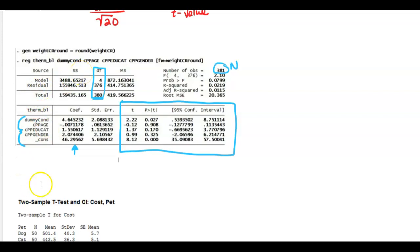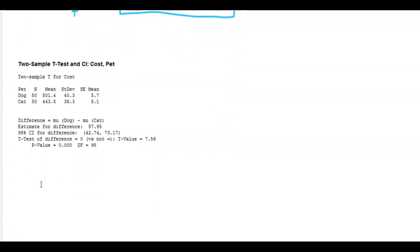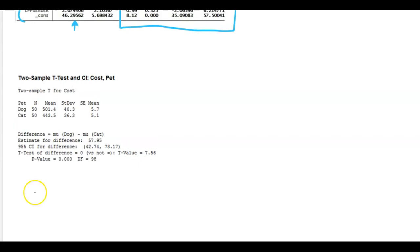So the last one is another basic one. And this one's an easier one to read compared to that last one. That last one was a little tricky. And so it is a two sample test. And so it gives you they're comparing the cost of something about dogs and something about cats. And it says the mean for dogs is 501. The mean for cats is 443.